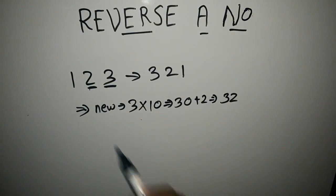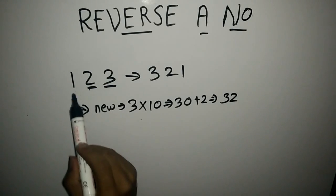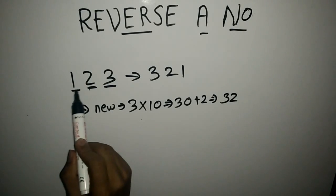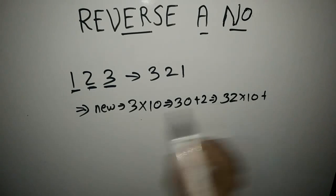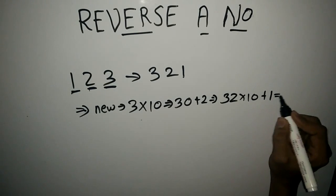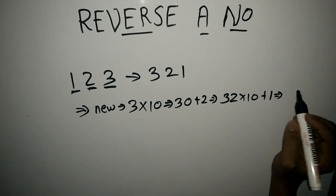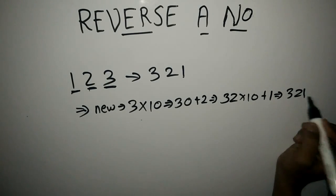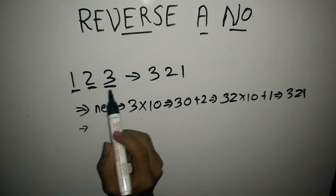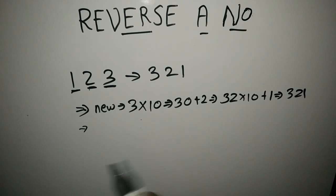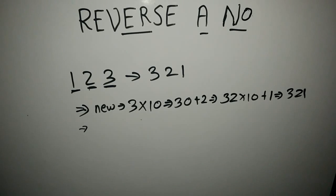As we are done with 2, we remove it and focus on 1. Then again multiply the number by 10 and add the next digit, that is 1. So now the number becomes 321, which is our desired value. This is the logic: keep taking one digit from the units place, multiplying by 10, and adding the next digit.